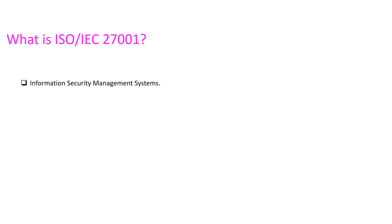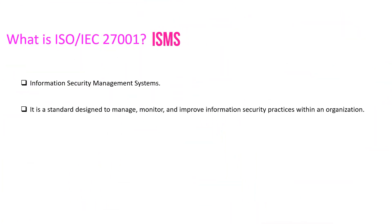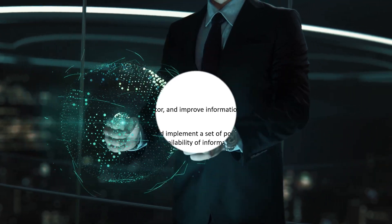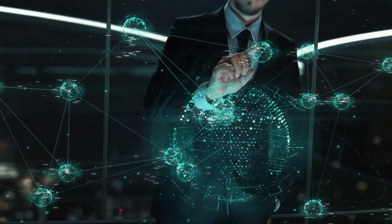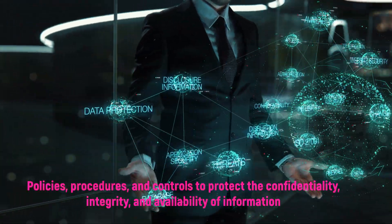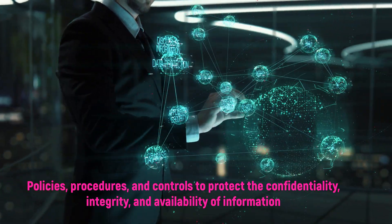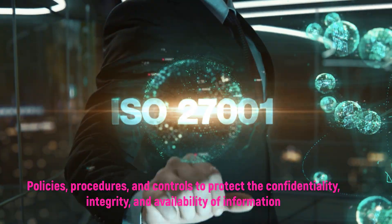Now let us discuss what is the ISO IEC 27001 standard. We already discussed ISO, IEC, and what a standard is. ISO IEC 27001 is a standard on Information Security Management System. The objective of this standard is to develop certain requirements which help to manage, monitor, and improve information security practices within an organization. ISO 27001 requires the organization to document and implement a set of policies, procedures, and controls to ensure the confidentiality, integrity, and availability of the information.